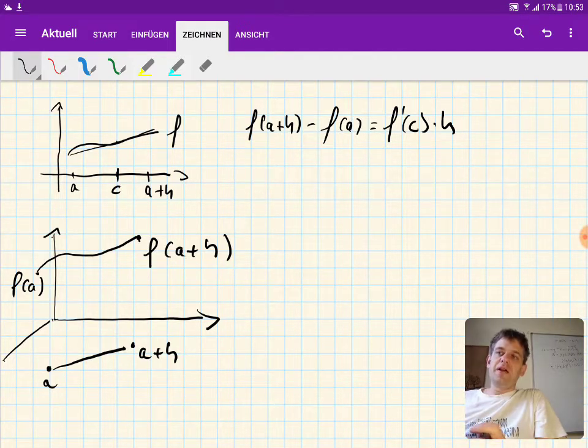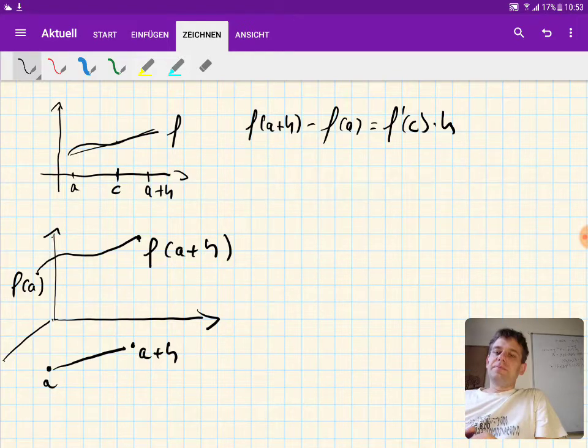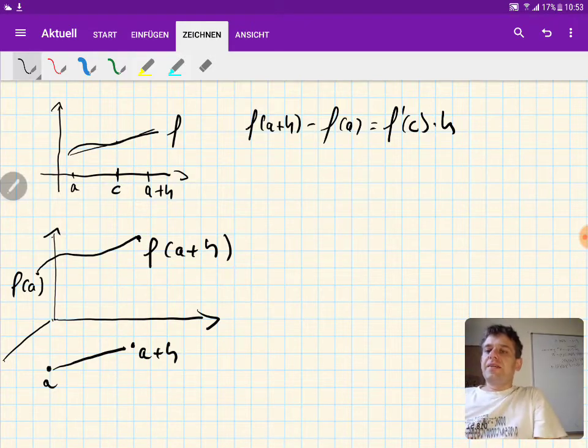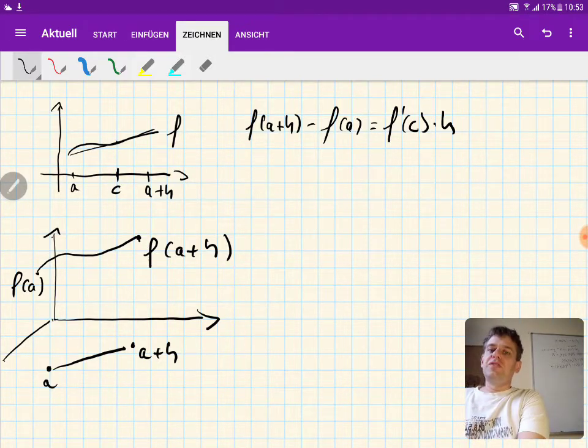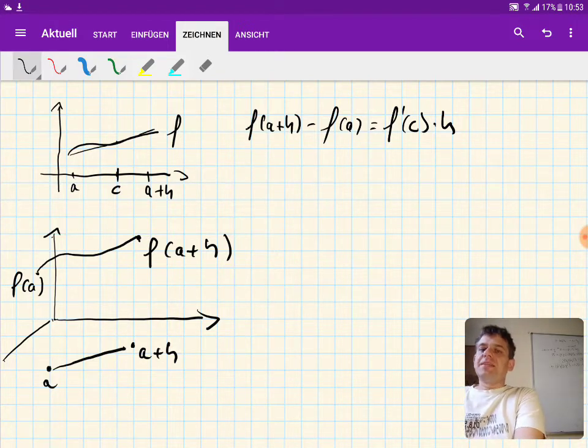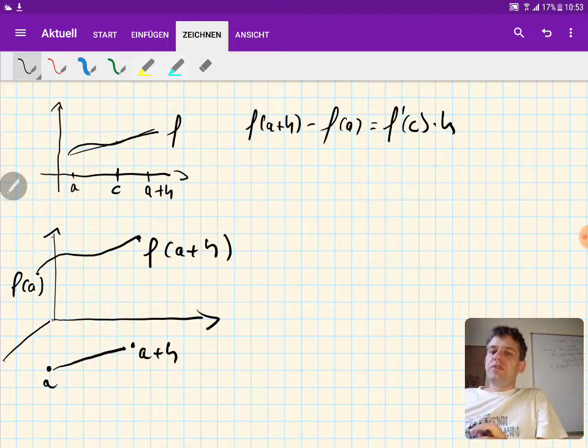But it is important to say it doesn't need to be a function which is a function of only two variables. It could very well be a function of n variables and of course we couldn't draw this. So what we draw here is of course the case that f is a function of two variables, but we understand that this is just a special case and in the proof we are going to treat the general case.